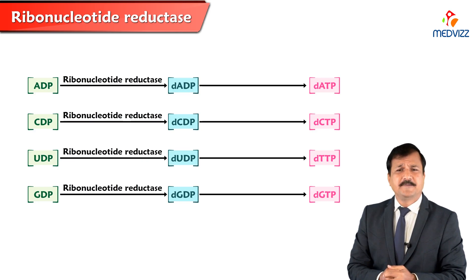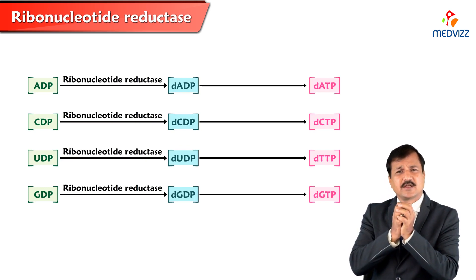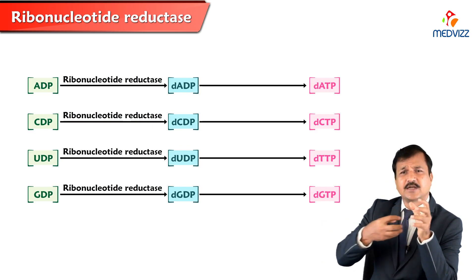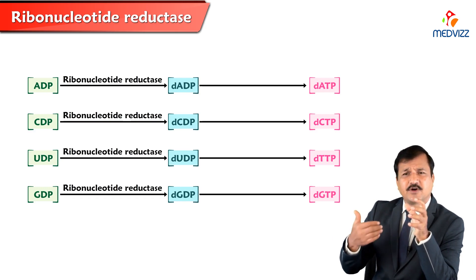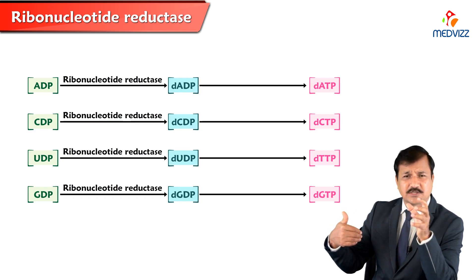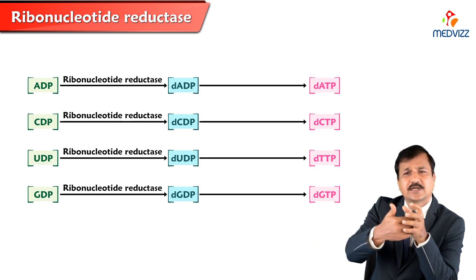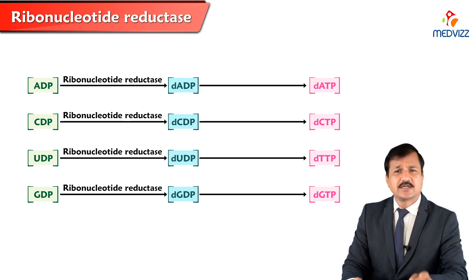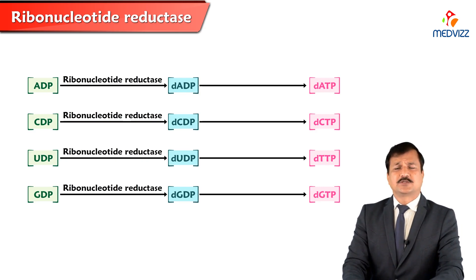Since ribonucleotide reductase converts all nucleoside diphosphates into deoxynucleoside diphosphates, this all happens at one active site. Individual nucleoside diphosphates bind to the active site and come out as deoxynucleoside diphosphates — ADP comes in and leaves as dADP, CDP comes in as dCDP, UDP comes in as dUDP. Since only one active site converts all of these, it must be highly regulated to ensure balanced synthesis of all deoxynucleoside triphosphates.